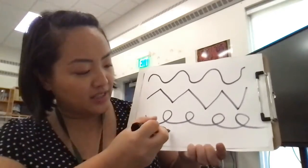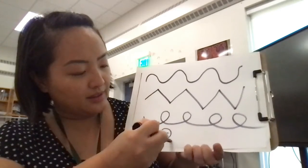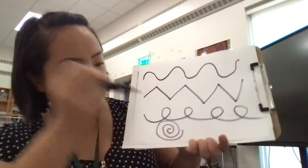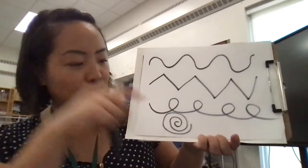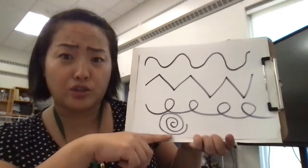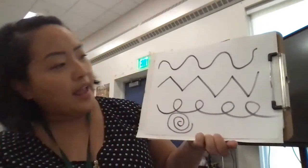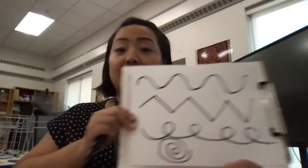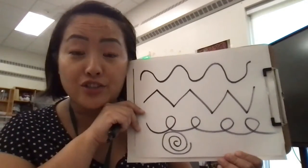And there are other kinds of lines too. For example, this line here doesn't even go across, it just stays in one place. I call that a swirl. And all of these different lines are used to make pictures.